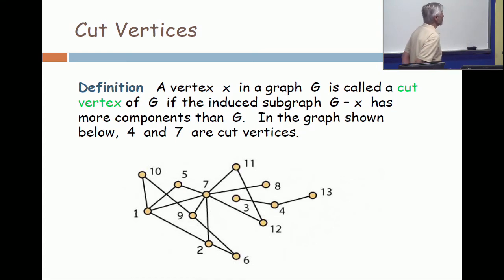A vertex x in the graph G is called a cut vertex if the induced subgraph that you get when you remove x from G has more components than the original graph. All right, now look at this graph with vertex set 1 through 13. How many components does it have? I hope you see two.